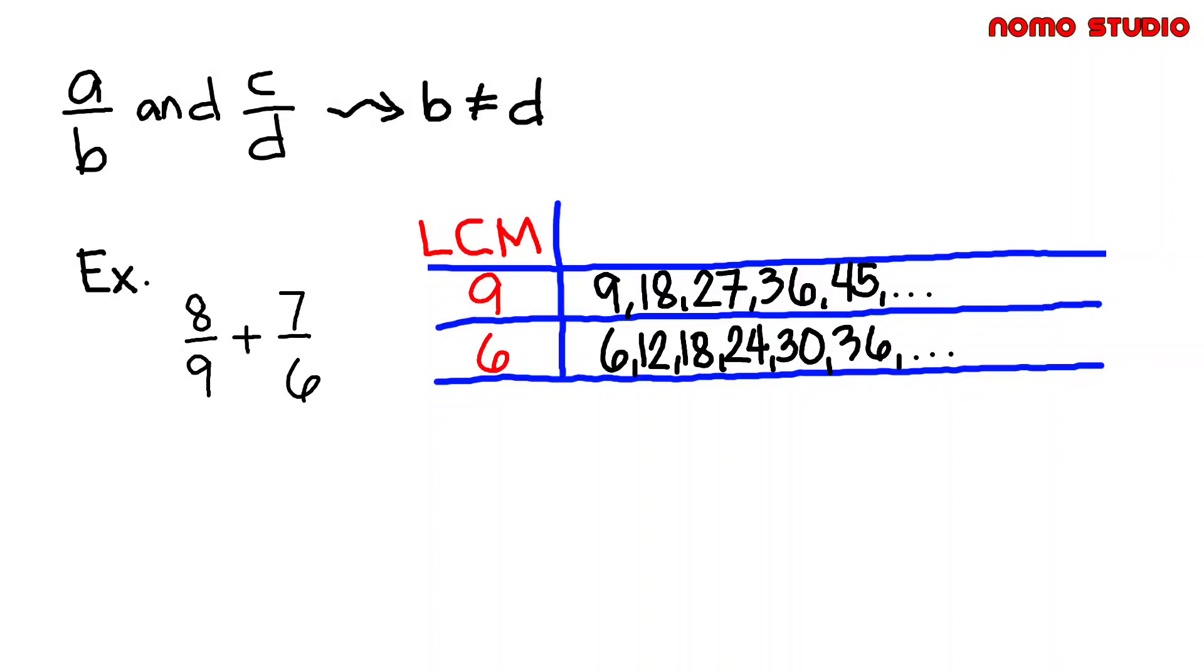By just looking at the table, the least common multiple of both 6 and 9 is 18. Therefore, our least common denominator here is 18.